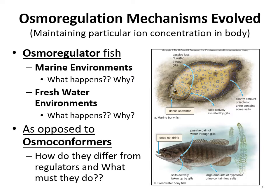Before focusing on humans and the kidneys, it's important to note that many different mechanisms have evolved to handle water-salt balance. There are two terms regarding osmoregulation mechanisms: osmoregulators and osmoconformers. Osmoregulators are organisms that have a different solute concentration from their environment and must adapt mechanisms to regulate their salt-water balance.